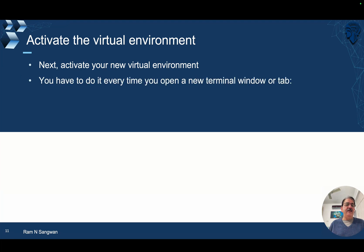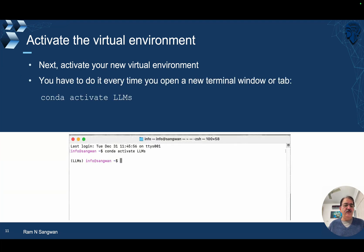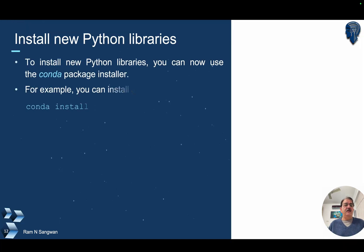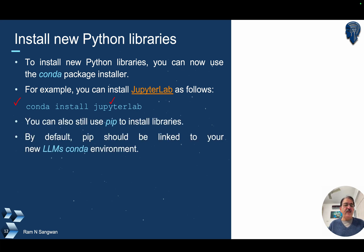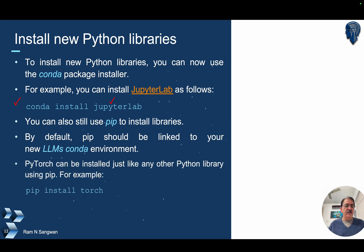Activate the environment with conda activate LLMS, and you'll see the environment name appear in your shell prompt. JupyterLab and other dependencies are already handled by the requirements.txt file. If not yet installed, you can also use pip to install JupyterLab, and torch is also included in the requirements.txt file.